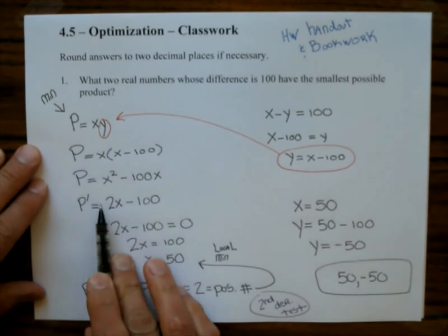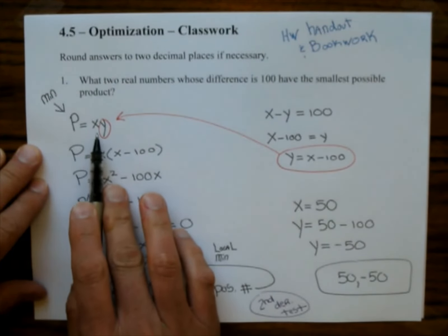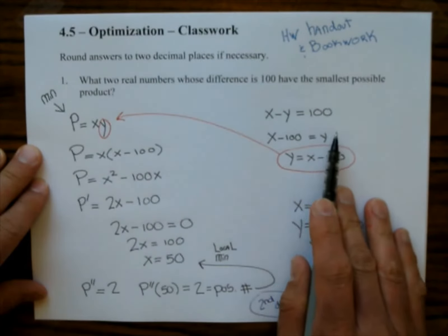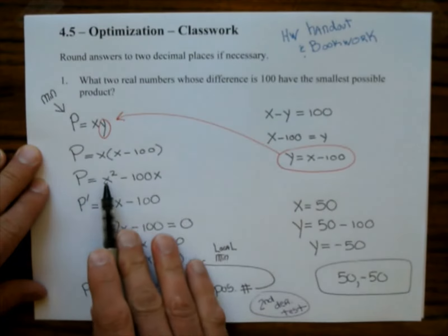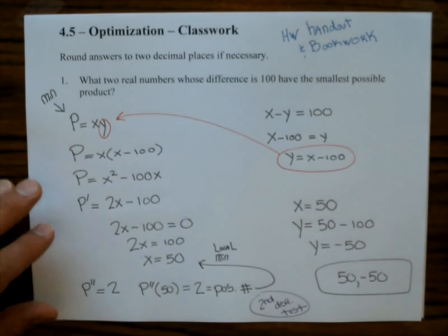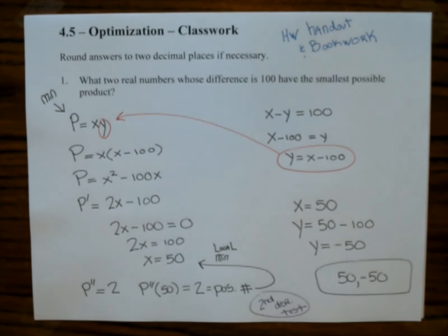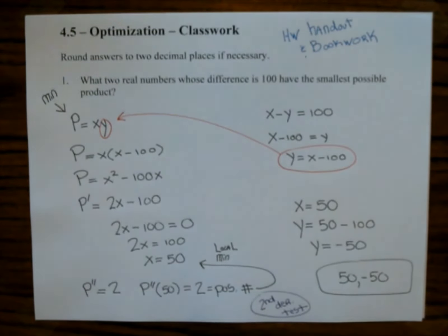These optimization problems all work out similarly: you have more than one letter on the right-hand side of what you're trying to minimize or maximize, you come up with another equation, solve for one letter, plug it back in, and hit it with the derivative. The first one may seem a little scary, but doing your homework and practicing will help.